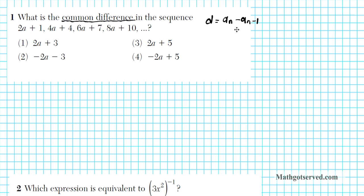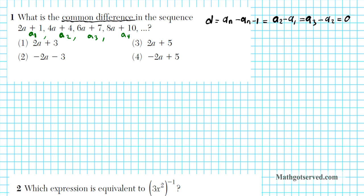A term minus the term before it gives you the common difference. In this sequence we have four terms. Let's go ahead and index them: a1 is the first term, a2 is the second, a3 is the third, and a4 is the fourth. To find the common difference, we can pick any two consecutive terms and subtract — we can compute a2 minus a1, or a3 minus a2, or a4 minus a3. Any of these will give exactly the same answer.